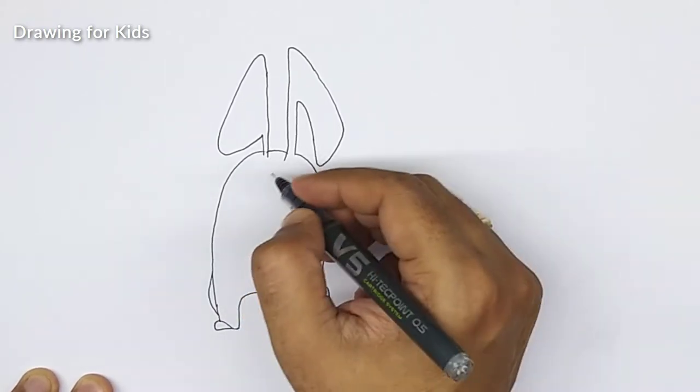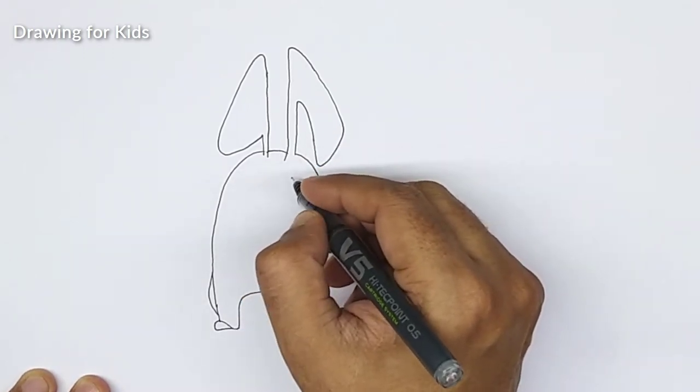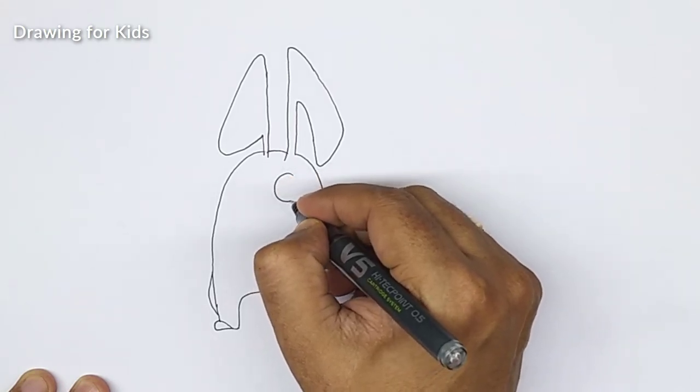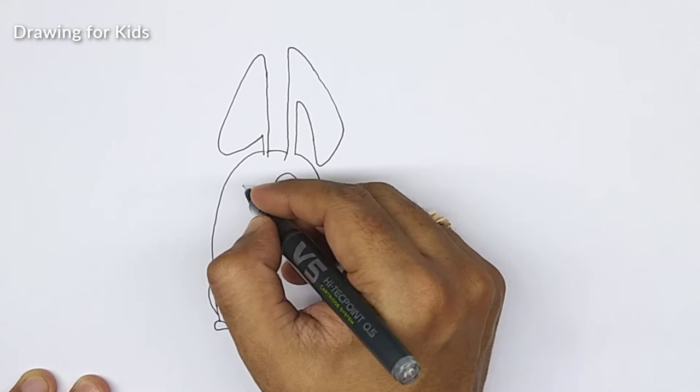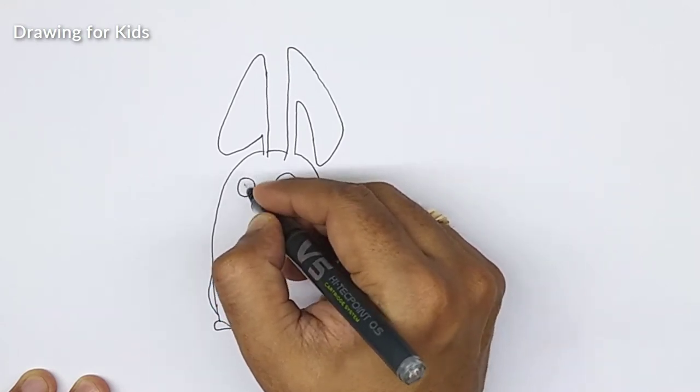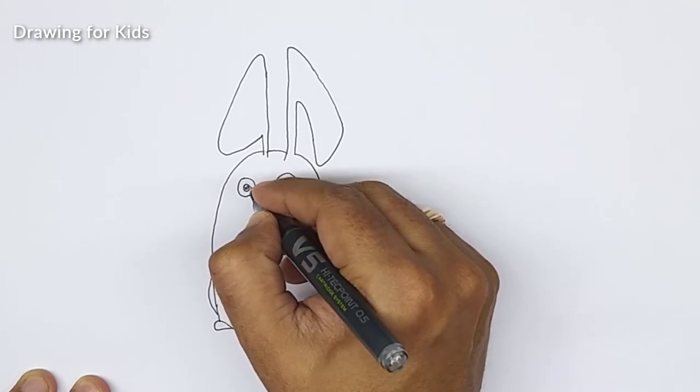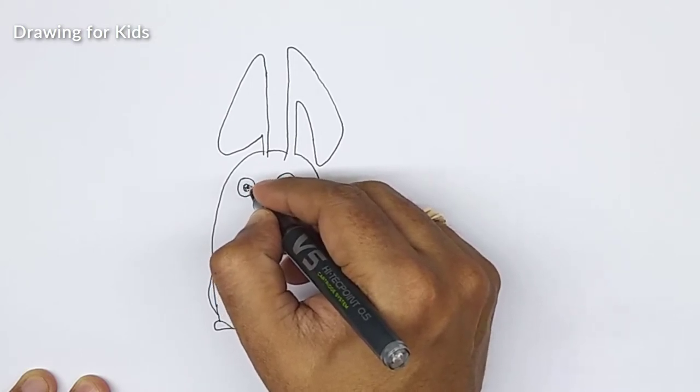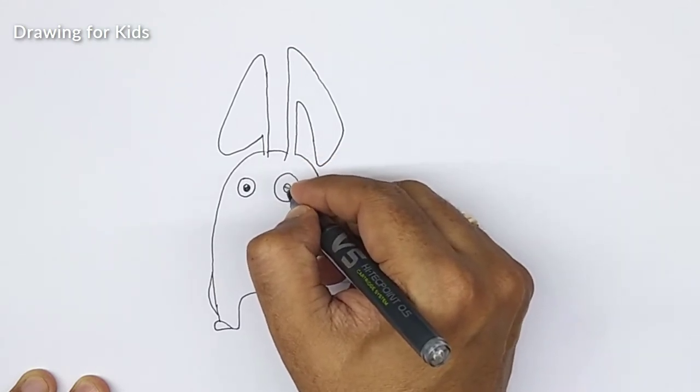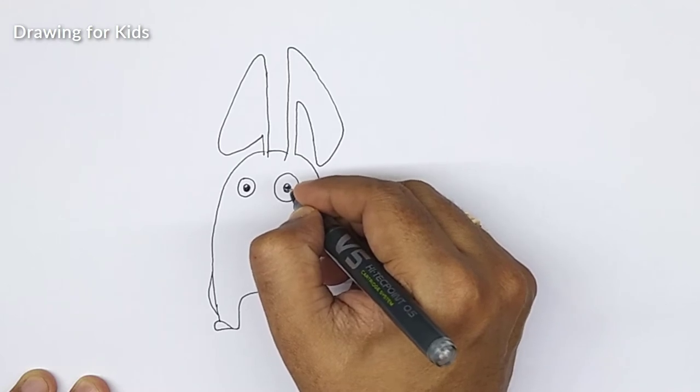Now the interesting part. We will make two eyes and one big and one small. Children we don't do it but it's funny. Small eyeball. Small eyeball. Like this. Not this one.